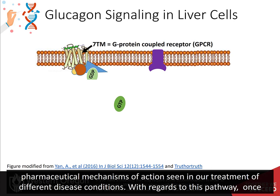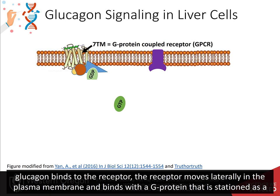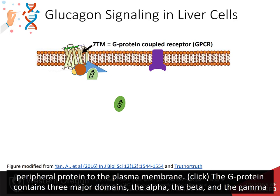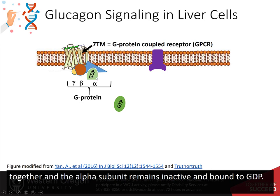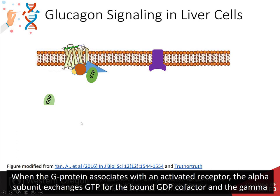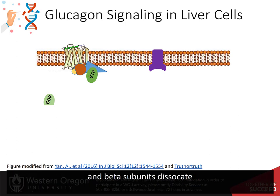With regards to this pathway, once glucagon binds to the receptor, the receptor moves laterally in the plasma membrane and binds with the G-protein stationed as a peripheral protein to the plasma membrane. The G-protein contains three major domains: the alpha, the beta, and the gamma domain. The alpha domain is capable of binding to the GDP and GTP cofactors. When the G-protein is inactive, all three subunits stay together and the alpha subunit remains inactive and bound to GDP. When the G-protein associates with an activated receptor, the alpha subunit exchanges GTP for the bound GDP cofactor, and the gamma and beta subunits dissociate.